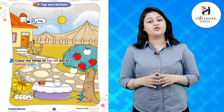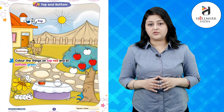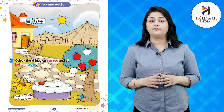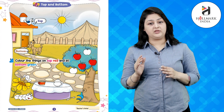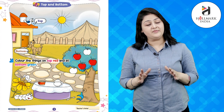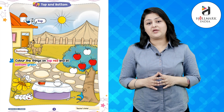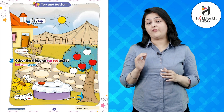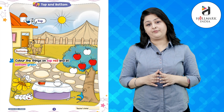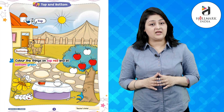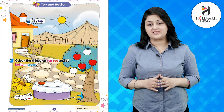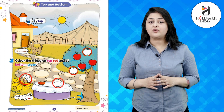Hello kids, I hope you are fit and fine. Today we will be reading the chapter 'Top and Bottom.' Top means ooper, bottom means neechi. In this picture, you can see the sparrow is sitting at the top of the house and the dog is standing at the bottom of the house.